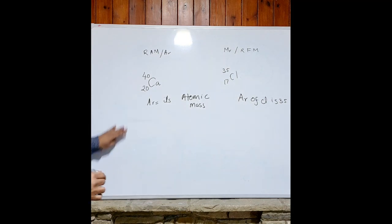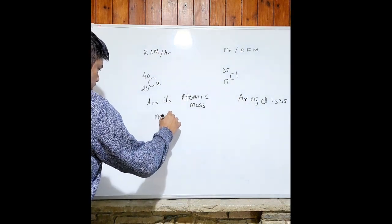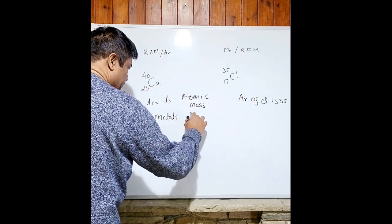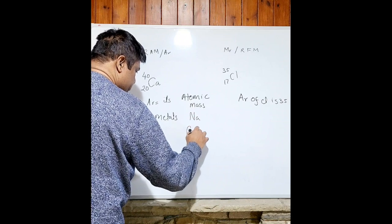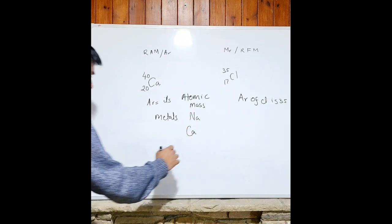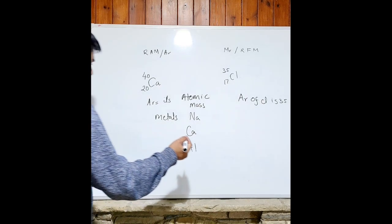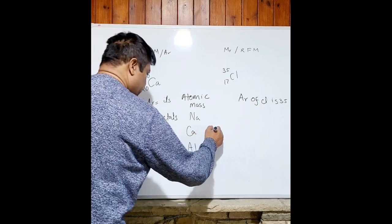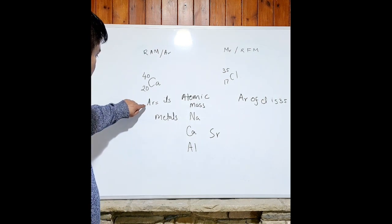Monoatomic state means mostly metals — metals exist by themselves, like sodium (Na), calcium, aluminium, strontium. They exist on their own, so we use the term AR for them.